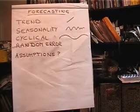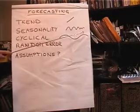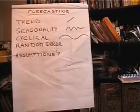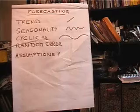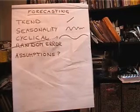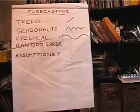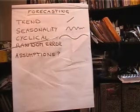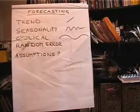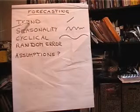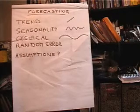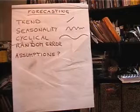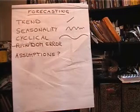Cyclical is also a wave, but it's much longer than the seasonality component. Our economy, for example, is cyclical in nature, where we have growth periods and recessions. Cyclical is the hardest thing for us to forecast. Trend and seasonality are easier to forecast. And of course, random error is impossible to forecast — it's completely random.